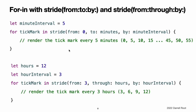Some users might want fewer tick marks in their UI — they could prefer one mark every five minutes instead. Use the stride(from:to:by:) function to skip the unwanted marks. Closed ranges are also available by using stride(from:through:by:) instead. You can use this syntax to iterate any collection, including your own classes and collection types, as long as those types conform to the sequence protocol.